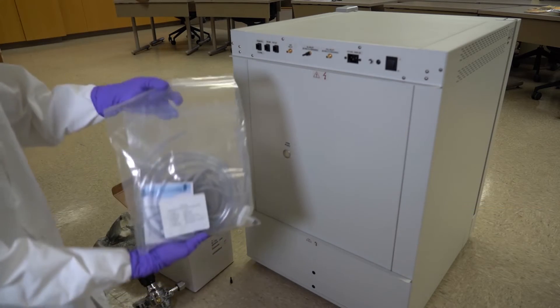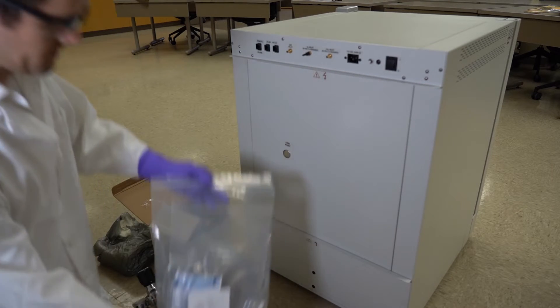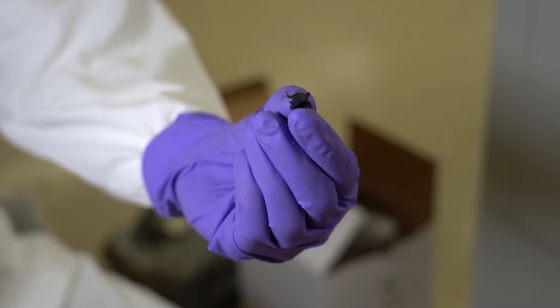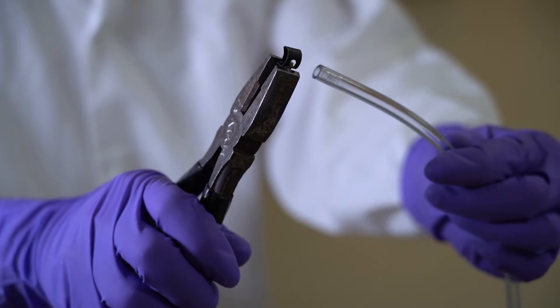Open the plastic bag of parts and find a long vinyl tube measuring six feet or two meters long. Connect one end of the tube to the CO2 inlet on the back of the incubator using a black clamp.